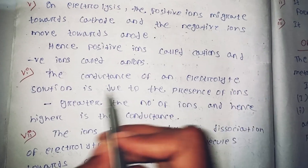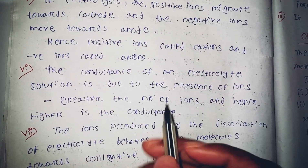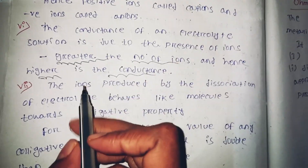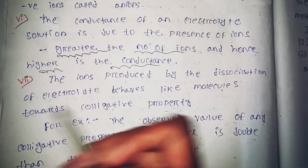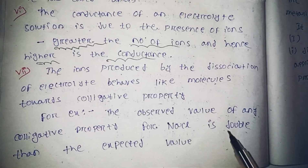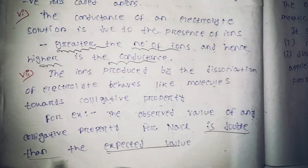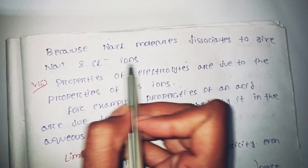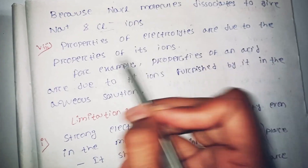The conductance of an electrolyte solution is due to the presence of ions — greater the number of ions, higher is the conductance. The ions produced by the dissociation of the electrolyte behave like molecules with respect to colligative properties. For example, the observed value of any colligative property for NaCl is double the expected value, because NaCl dissociates to give Na⁺ and Cl⁻ ions. Properties of the electrolyte are due to the properties of its ions.